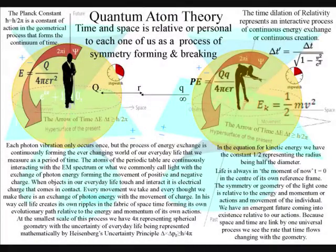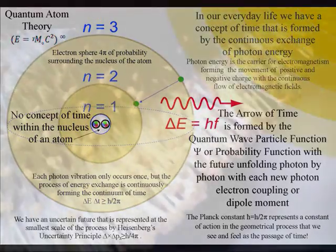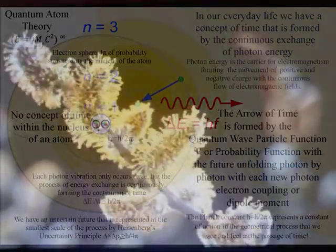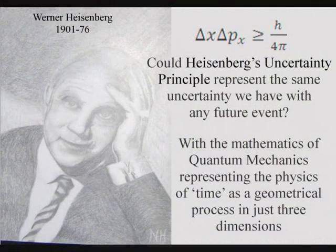Therefore, we can have a universal process, with the spontaneous absorption and emission of photon energy, forming the ever-changing world of our everyday life. The uncertainty of everyday life is represented, at the smallest scale of this process, by Heisenberg's Uncertainty Principle.